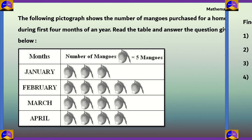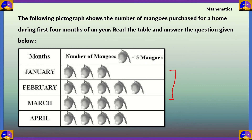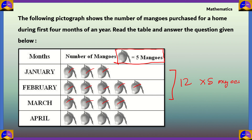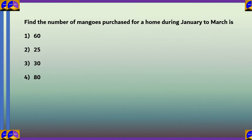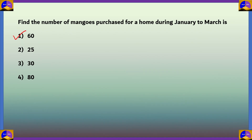The question asks for mangoes purchased from January to March — the first three months. Counting the mango pictures in the pictograph from January to March gives a total of 12 pictures. But that is not the number of mangoes — the key states that one mango picture equals 5 mangoes. So from January to March it is 12 × 5 = 60 mangoes. Option 1, 60, is the correct answer.